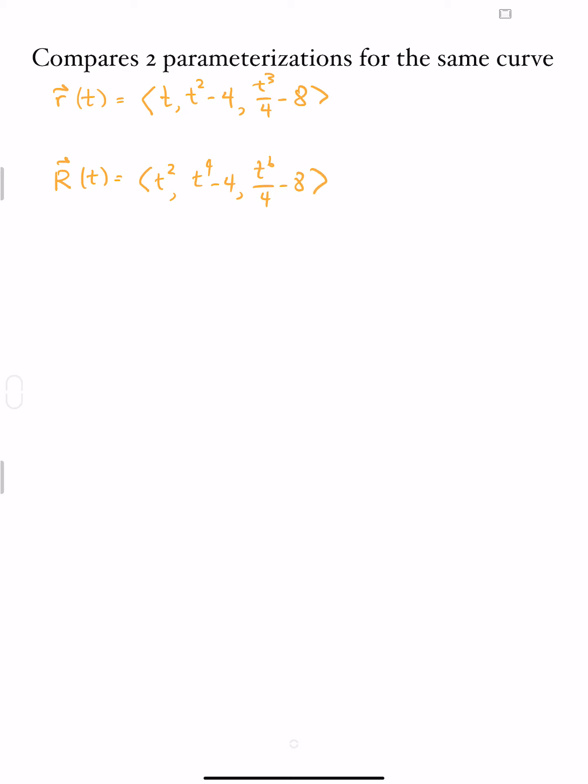I'm going to require that t ≥ 0 at all times and look at what happens when t = 0. When t = 0 for each of these two curves, small r(0) is going to be the vector ⟨0, -4, -8⟩. And when t is 0 for the capital vector, I'm going to end up at the same point. So these two vectors have the same starting point.